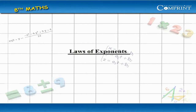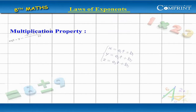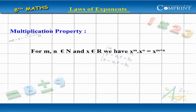Laws of Exponents: Multiplication Property. For n belonging to capital N and x belonging to R, we have x to the power m multiplied by x to the power n equal to x to the power of m plus n.